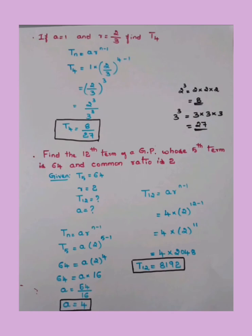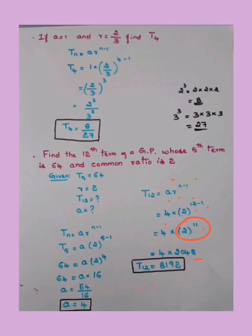Now find T12 using T12 = a·r^(n−1) = 4 × 2^(12−1) = 4 × 2^11. Calculate 2^11 by multiplying 2 eleven times (not 2 × 11). After solving, T12 = 8192.